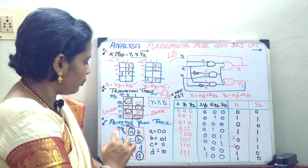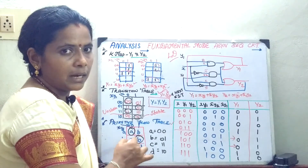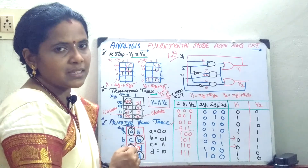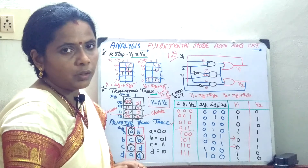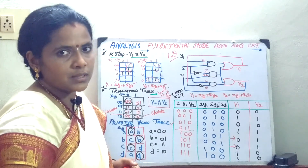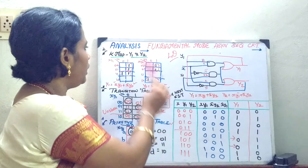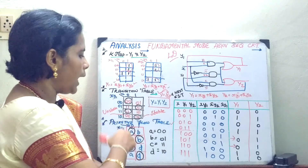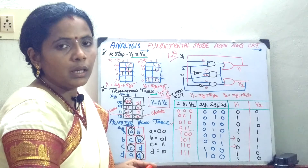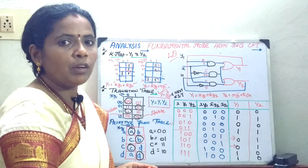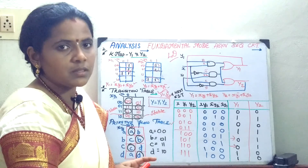Internally, the stable state is attained, and when this stable state is attained, input is transferred to the output. With this I conclude today's session. We have seen: the next state table, the K-map, the transition table, and the primitive flow table. In the next session, we will be seeing about shift registers. Thank you.